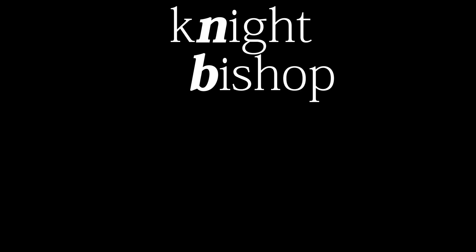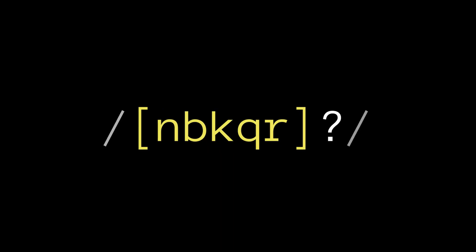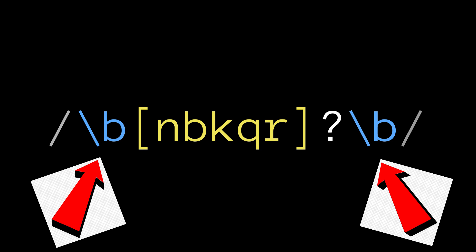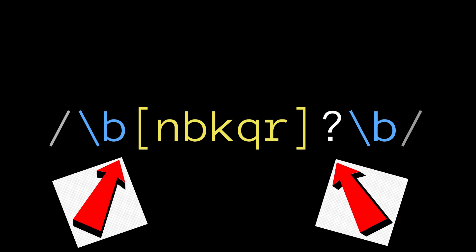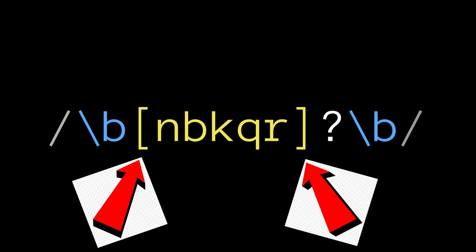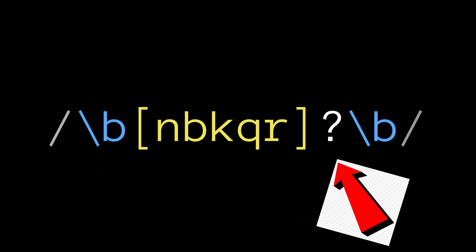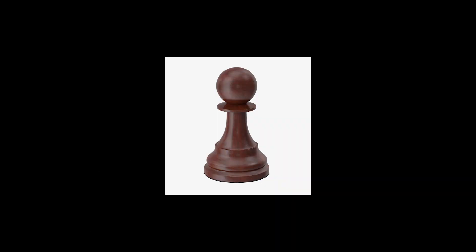To begin constructing our regular expression for matching algebraic notation, we can start with the names of the pieces. The shorthand for each piece is N, B, K, Q, R, or nothing if it's a pawn. In regex, we want to match zero or more of those shorthand piece names within a word boundary. The backslash-b defines a word boundary, the brackets mean one of anything in the list, and the question mark means it'll still match if nothing is there, which covers the pawn case.